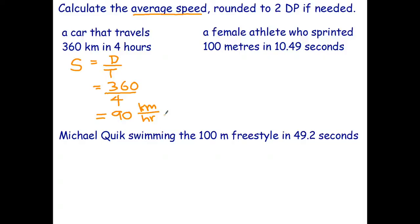Okay, here we have a female athlete who sprinted 100 meters in 10.49 seconds. So once again, we're looking for the average speed. So speed equals distance over time. The distance that she ran was 100 meters. The time it took her to run that is 10.49 seconds, and for this one I'm going to have to use my calculator.